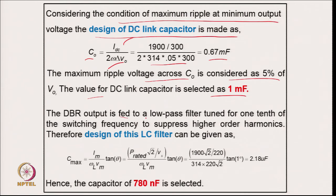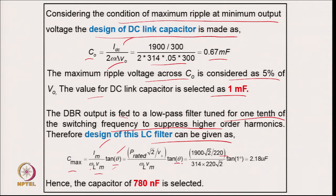For the EMI filter: the rectifier output is fed to a low-pass filter tuned at one-tenth of switching frequency. The capacitor for the LC filter is calculated from I_m / (V_m × ω_l × tan θ) with θ = 1 degree, giving 2.18 μF. This is the maximum value; a much lower value of 780 nF is selected.